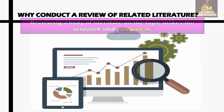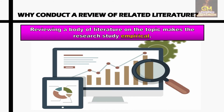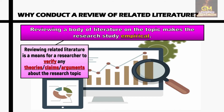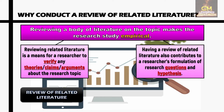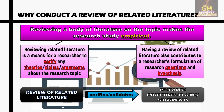Reviewing a body of literature on the topic makes the research study empirical. Reviewing related literature is a means for a researcher to verify any theories, claims, or arguments about the research topic. Also, having a review of related literature contributes to a researcher's formulation of research questions and hypotheses. In other words, a review of related literature verifies or validates research objectives, claims, or arguments that the researcher may have in relation to the topic that he is conducting a study on.